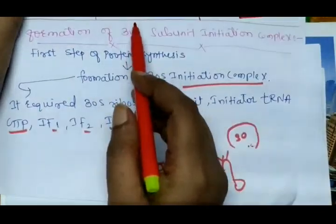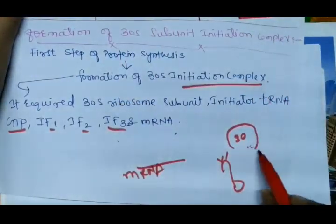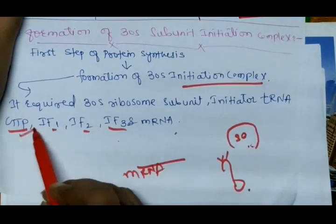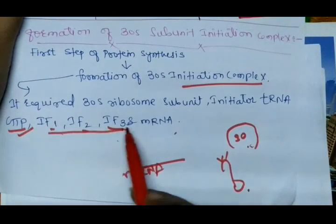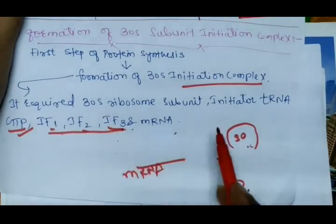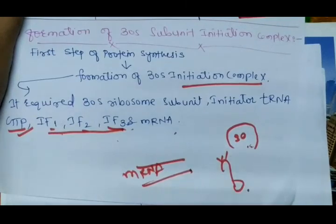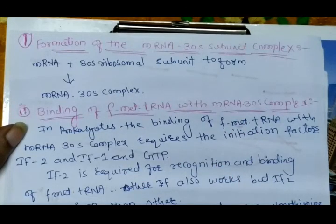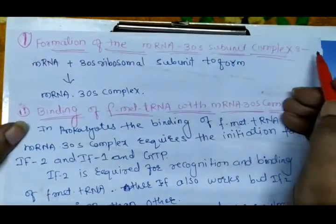All these components — the 30S ribosomal unit, initiation tRNA, GTP, initiation factors IF1, IF2, IF3, and mRNA — are required for the formation of the 30S subunit initiation complex.